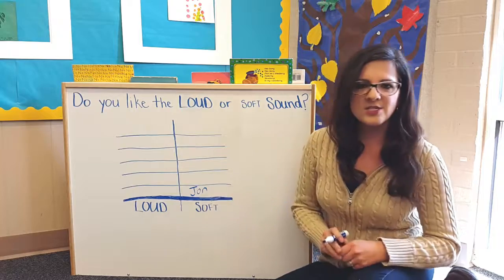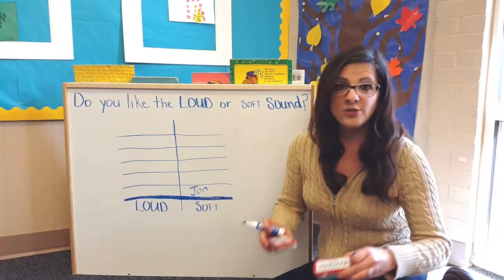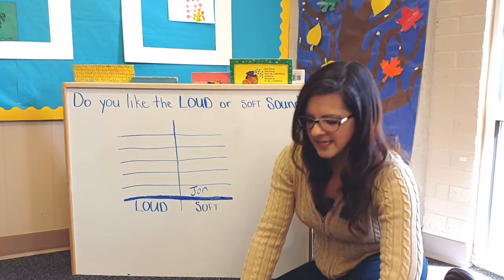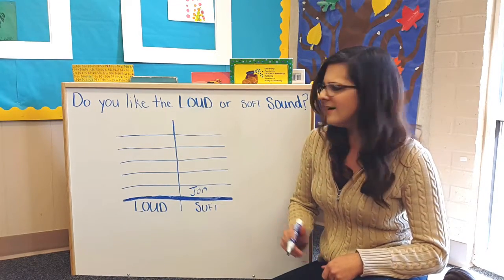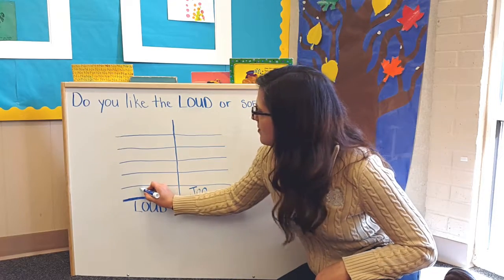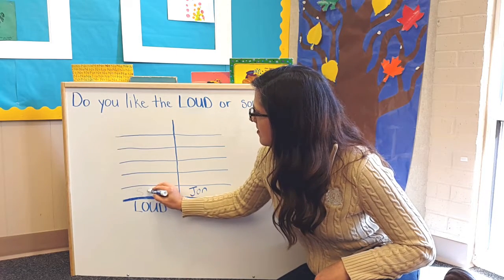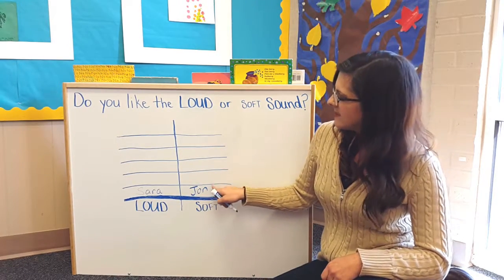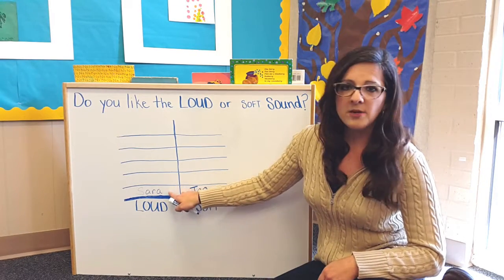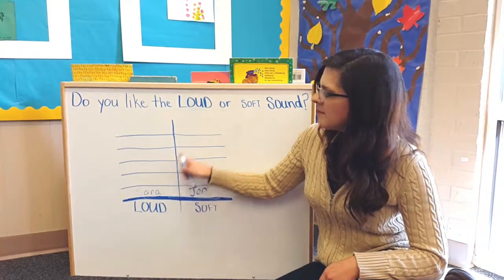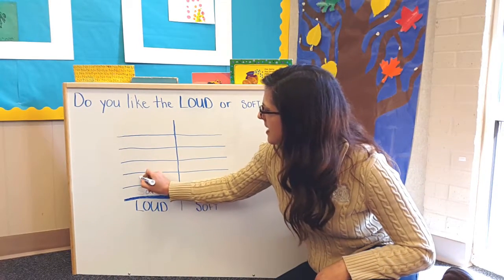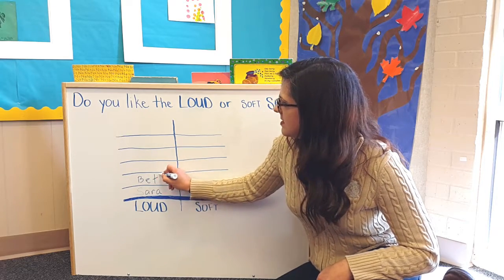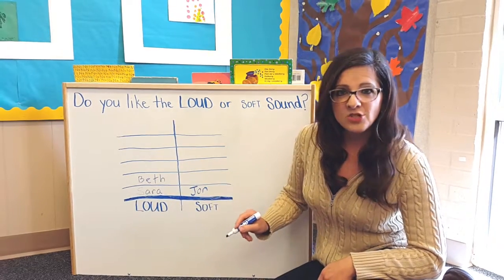And I would ask my next student, Sarah, do you like the loud sound or the soft sound? And then she would say, I like the loud sound. So I would write her name in the loud column. I would ask each student their opinion and then fill up my whole graph, putting their names in each spot until the graph was done, talking to each child individually.